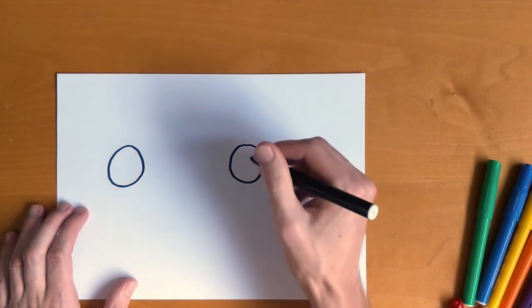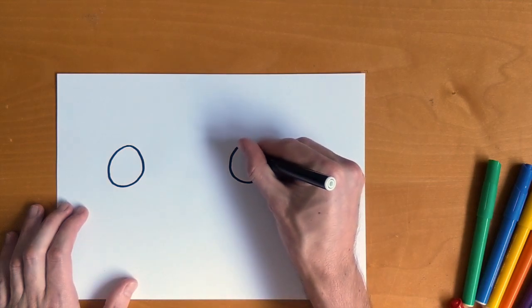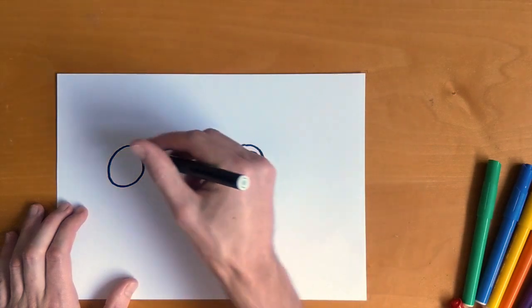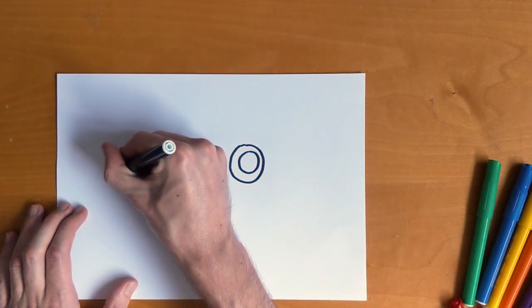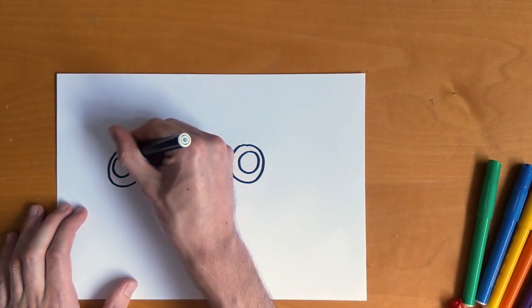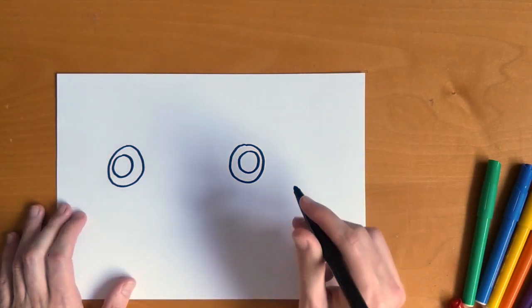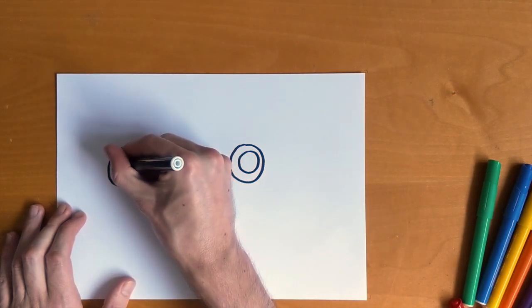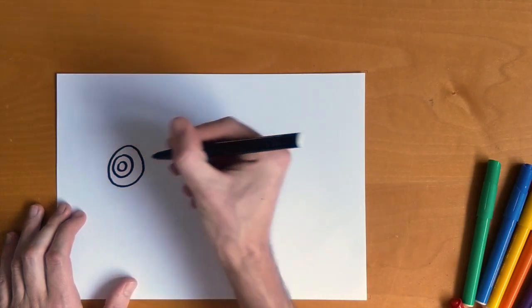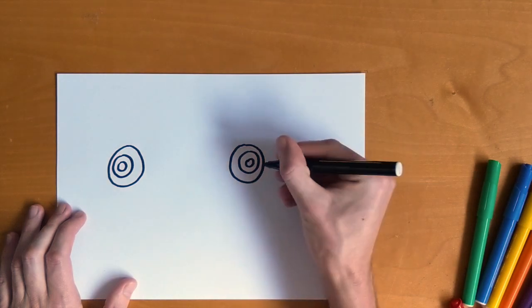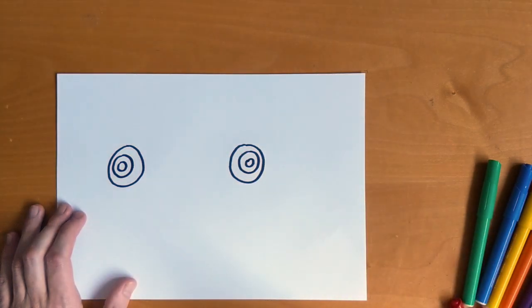So we're going to draw another big circle inside that circle for the eyeball and do the same on the other one. Perfect. Now we're going to draw a little pupil, so another little circle inside a circle inside another circle. That's a lot of circles, and we're going to color that in later.